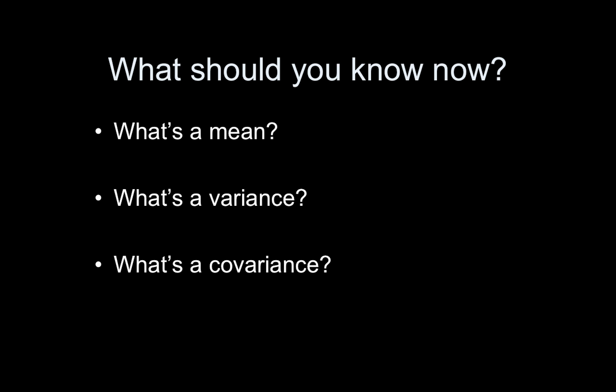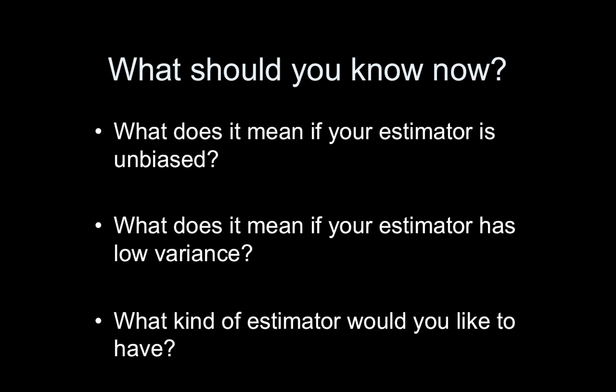That's it. Not a lot of terminology, like I said. Here are the things you should know by now. You should know what a mean is or an expected value. You shouldn't be tripped up if I say expected value instead of mean. And you should know what a variance and what covariance are. What does it mean if your estimator is unbiased? Likewise, what does it mean if your estimator has low variance? And what kind of estimator would you like to have? Would you rather it have no bias, no variance, or, well, of course, both. But we're not going to have that. So second best option.